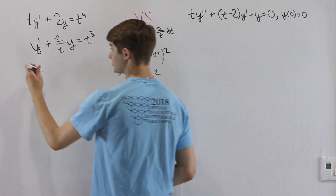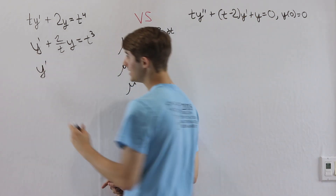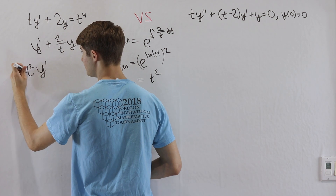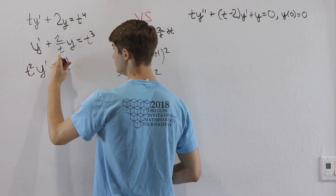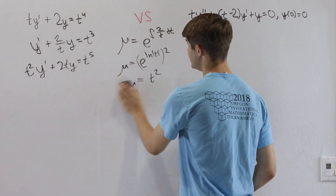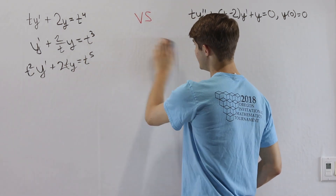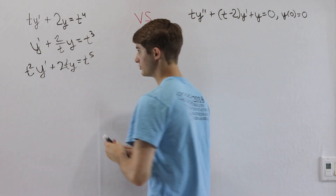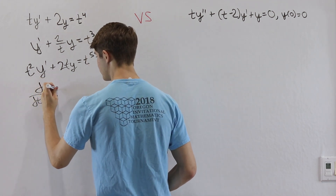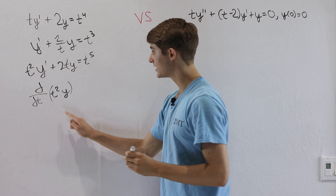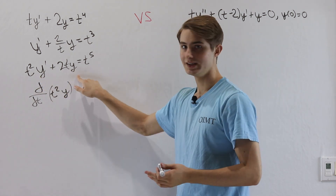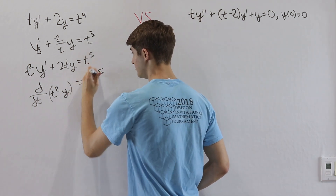We go back to our differential equation and multiply everything through by t squared. That gives us t squared y prime plus 2ty equals t to the 5th power. On the left side we recognize this as a product rule: it is the derivative with respect to t of t squared times y, since expanding that gives t squared y prime plus 2t times y.